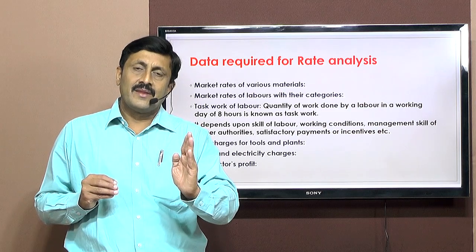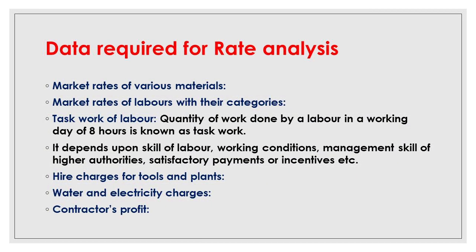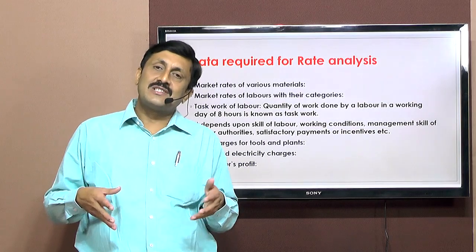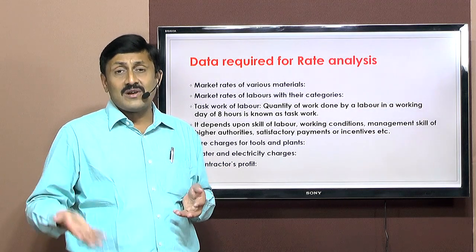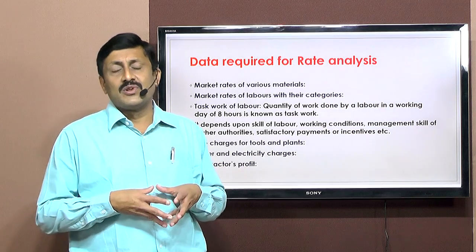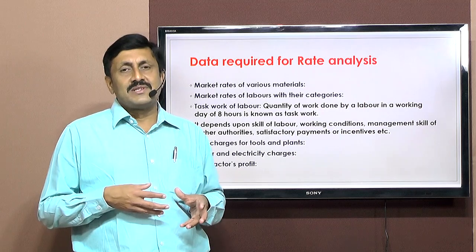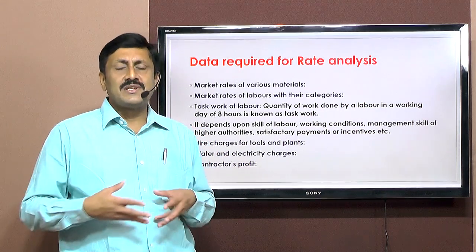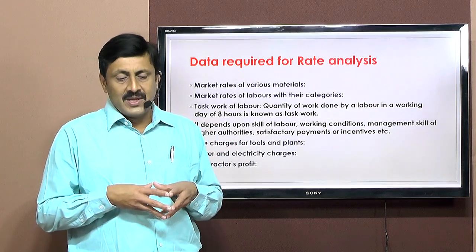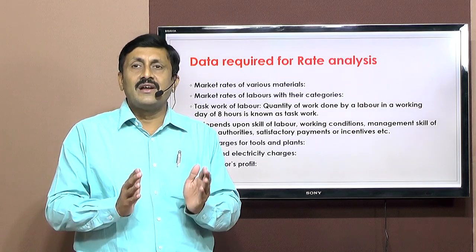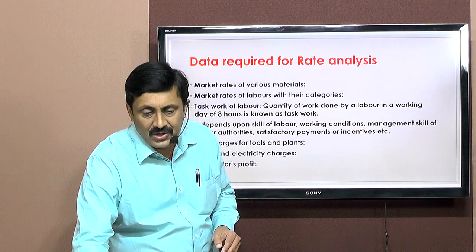Finally, the contractor needs to decide his profit. After executing a project for 12, 15, or 24 months, if the contractor gets no profit, all the efforts and energy consumed in the work become zero — or rather, a big loss. So the contractor must keep a certain percentage as profit. Usually 10% is the permissible standard percentage allowed for each and every contractor against any construction project. This is the data required for determining rate analysis or rate of a particular item of work.